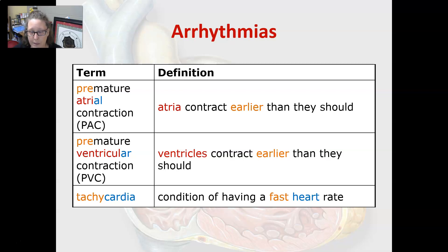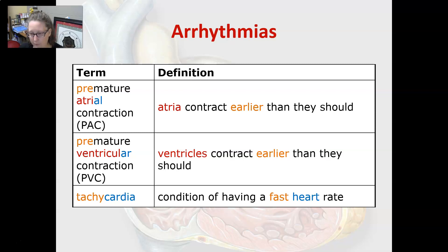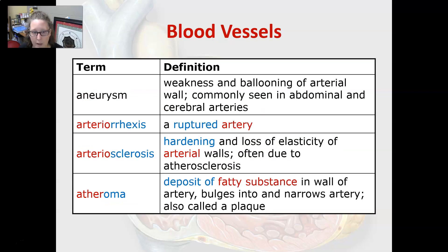In premature atrial contraction (PAC), the atria contract earlier than they should. In premature ventricular contractions (PVC), the ventricles contract earlier than they should. The problem is they are not completely filled, so they won't be completely emptied and won't be putting out the volume they need to. Tachycardia is a condition of having a fast heart rate.